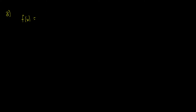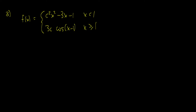Now we're going to jump into something a lot harder. We want to make this function continuous. f(x) equals c²x² minus 3x minus 1 when x is less than one, and it equals 3c times the cosine of (x minus one) when x is greater than or equal to one. We want to find values of c so that f(x) is continuous everywhere. When x is less than one the function is continuous because it's polynomial. When x is greater than one, the constant and trig function are always continuous. So both are continuous everywhere except at x equals one.